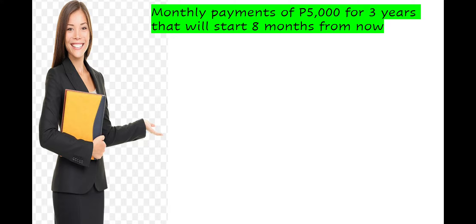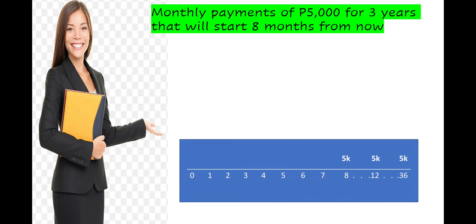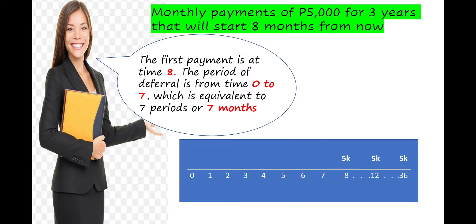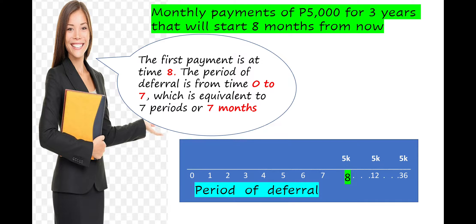An example: monthly payment of ₱5,000 for 3 years that will start 8 months from now. Since that is monthly for 3 years, there are 36 periods of payment. The first payment is at time 8, which is ₱5,000. The period of deferral is from 0 to 7, equivalent to 7 periods or 7 months. To find the period of deferral, we subtract 1 from 8, giving 7 periods or 7 months.